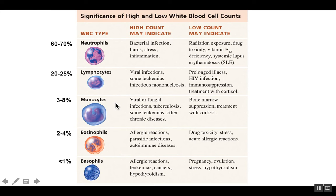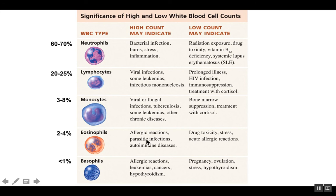Monocytes are involved in many different types of infection, so they might be high with a virus, a fungal infection, or a bacterial infection like tuberculosis — so that one's a little tricky. Eosinophils and basophils are both involved in allergic reactions, so they'll be upregulated if someone has anaphylaxis, which is a severe form of an allergic reaction. Eosinophils can also help fight parasitic infections, so they might be high if there's a parasite. Note that they do opposite things in the allergic response: eosinophils help reduce the reactions, whereas basophils promote them.